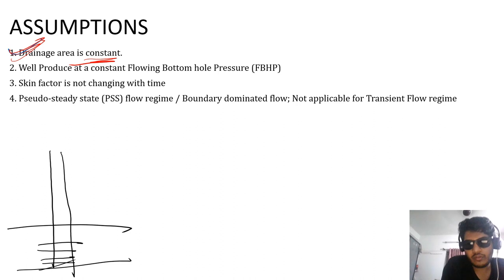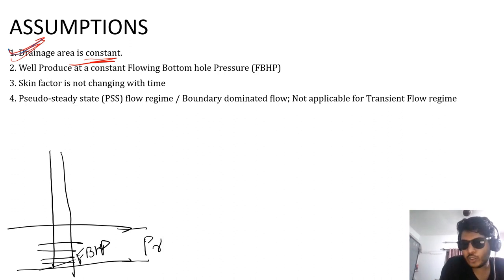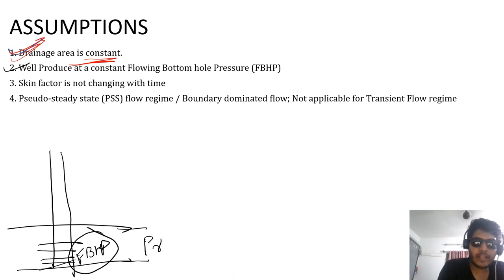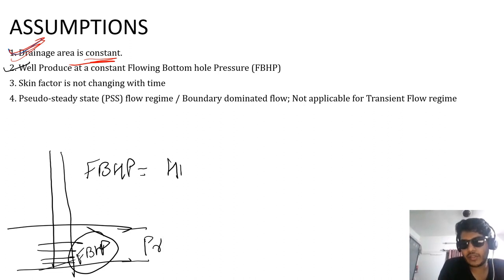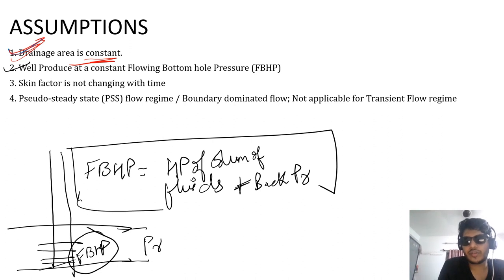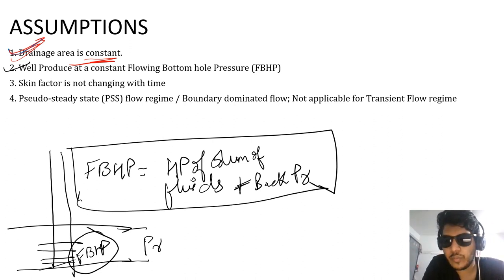This is the reservoir pressure and this is the flowing bottomhole pressure, FBHP. What we are assuming is that throughout the life of the reservoir this FBHP will remain constant — it's an assumption. As we know, flowing bottomhole pressure is the hydrostatic pressure of the column of fluids plus the back pressure that you are applying. This is how you calculate flowing bottomhole pressure.